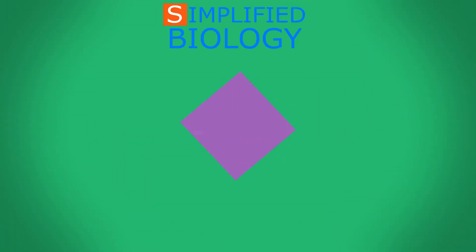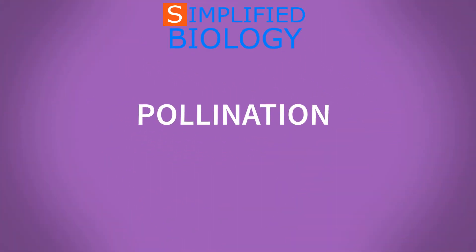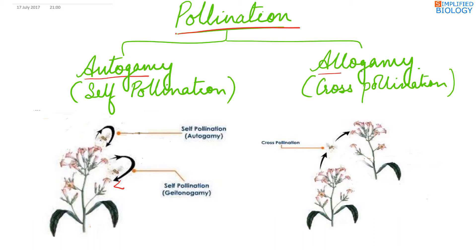Hello friends, welcome to Simplified Biology. Today's topic is pollination in flowering plants. Pollination is the transfer of pollens from the anther to the stigma. It is of two types: autogamy and allogamy.